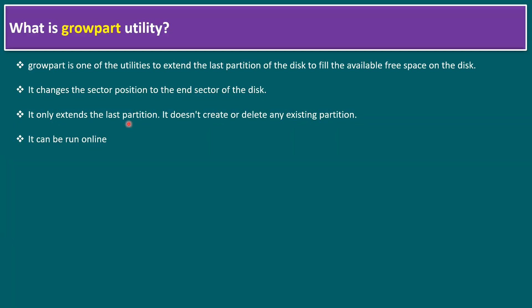Before jumping to increasing the root file system, let's quickly understand what the growpart utility is. Growpart is a utility to extend the last partition of the disk to fill the available free space. For example, if our Core OS disk is 100 GB and we plan to increase to 200 GB, the last partition will grow to 200 GB. It changes the sector position to the end sector of the disk. It only extends the last partition — it doesn't create or delete any existing partitions. And it can be run online; there will be no guest OS restart if Core OS is running on a virtual machine.